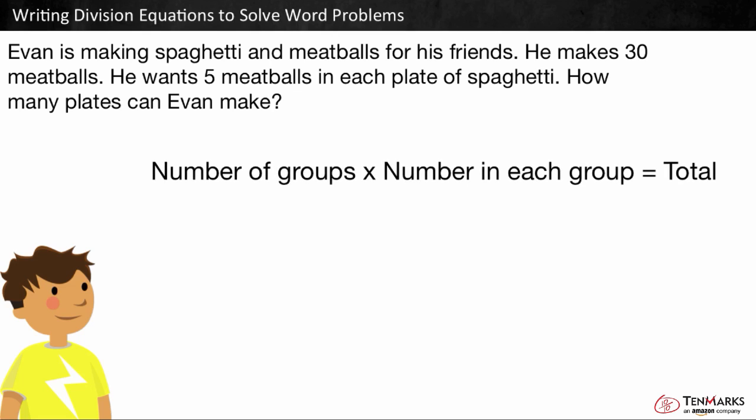The number of groups times the number in each group equals the total. So, if there were some number of plates, or groups, with 5 meatballs in each, and a total of 30 meatballs, we can write it as something times 5 is equal to 30.